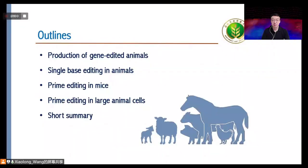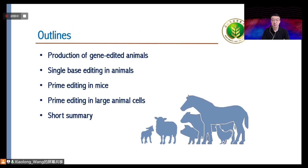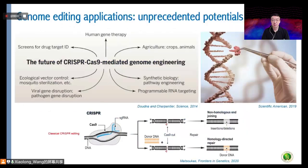I'll briefly talk from four aspects: first, the production of gene-edited animals as a summary; then single base editing in animals; then prime editing in mice; and also the preliminary work we have done using prime editors in large animal cells.